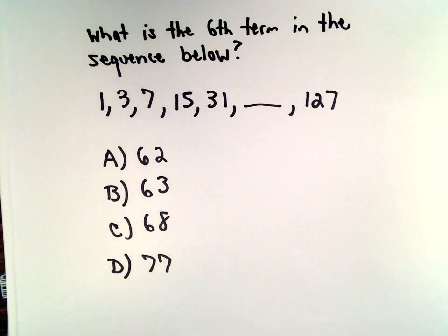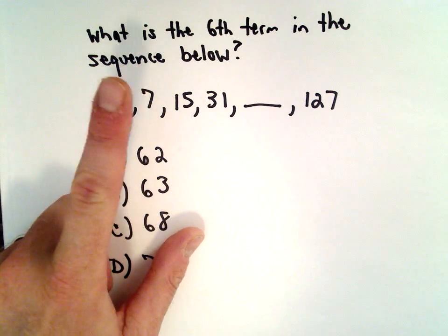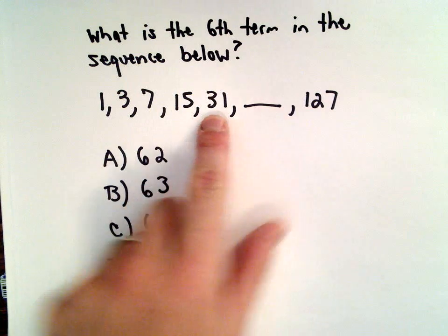In this example, we want to determine what is the sixth term in the sequence below. So the sequence is 1, 3, 7, 15, 31.